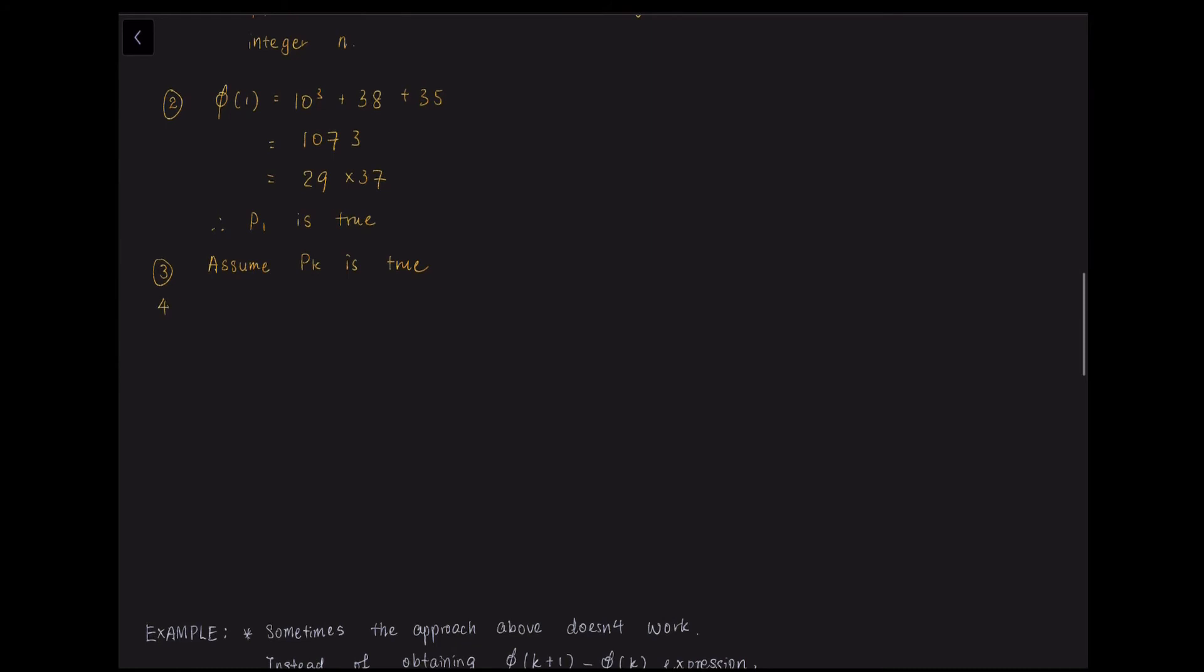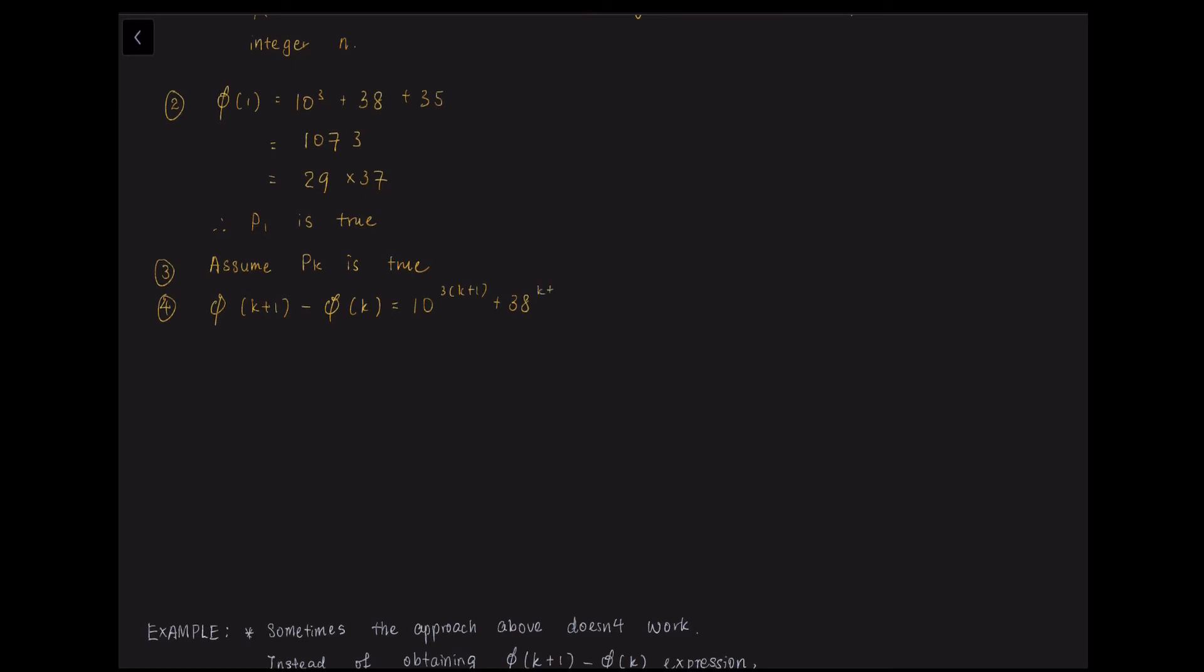So when you're trying to do divisibility test, it is a bit different from the summation of series one. In this case, it wants to do the minus. So subtraction of φ(K+1) minus φ(K) equals to 10 to the power of 3 times (K+1) plus 38 to the power of (K+1) plus 35 minus φ(K), which is 10 to the power of 3K plus 38K plus 35.